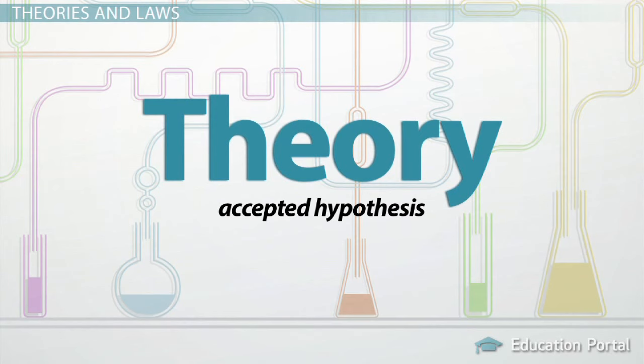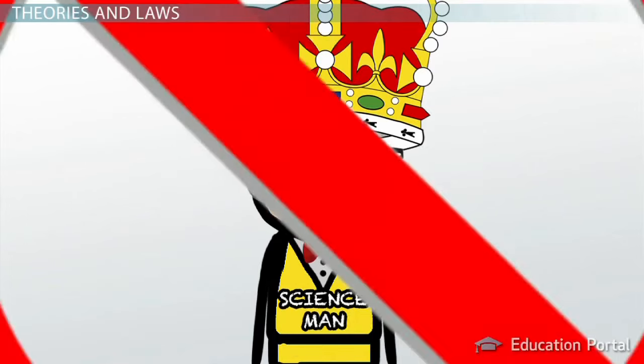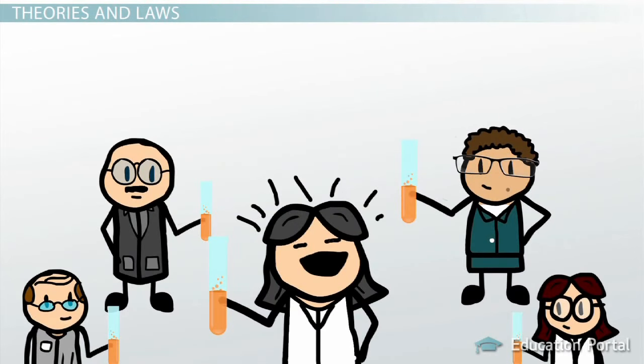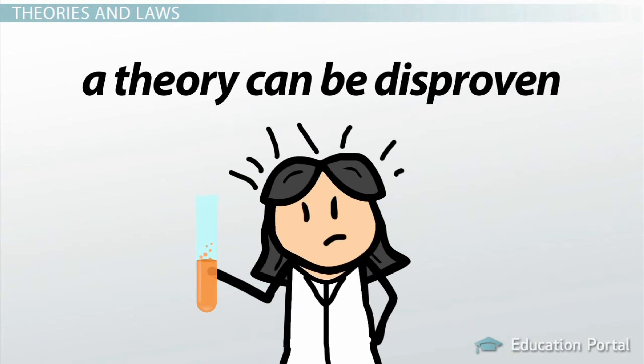When one hypothesis has been tested by many different scientists, and most of them have come to the same basic conclusion, then we can start calling the hypothesis a theory. There isn't any grand master of science who makes the final decree about a theory. It's more like a general consensus, and a theory can still be disproven if further research reveals enough evidence to refute it.